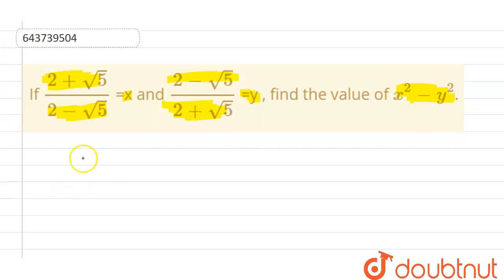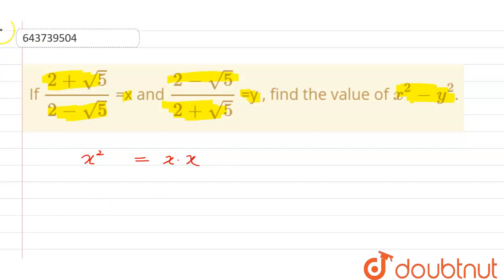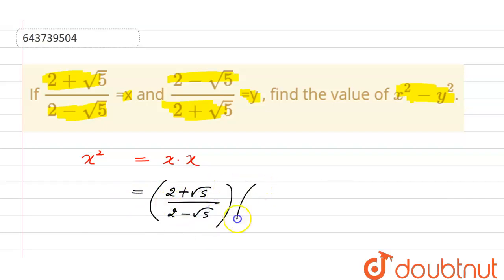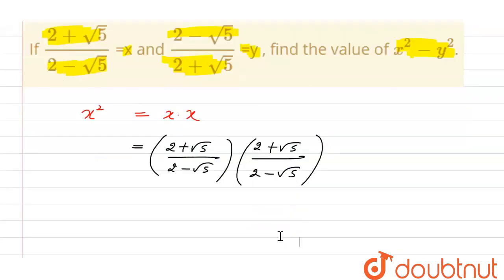We will start by calculating the value of x² first, then the value of y², then subtract both. So x² is equal to x into x. The value of x is (2 + √5) divided by (2 - √5), multiplied by (2 + √5) divided by (2 - √5).